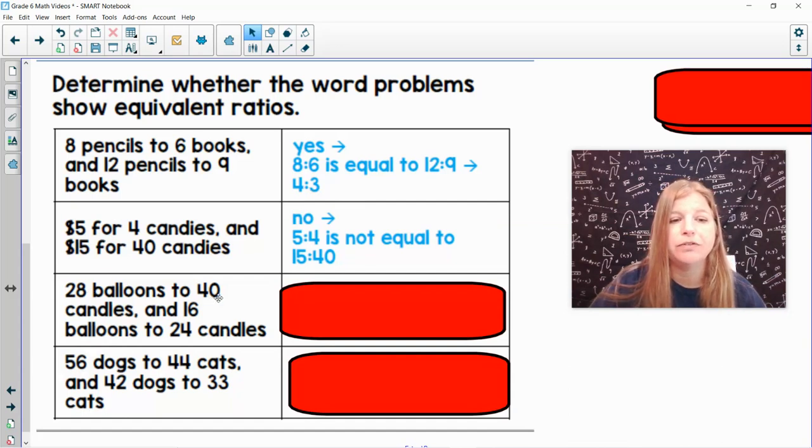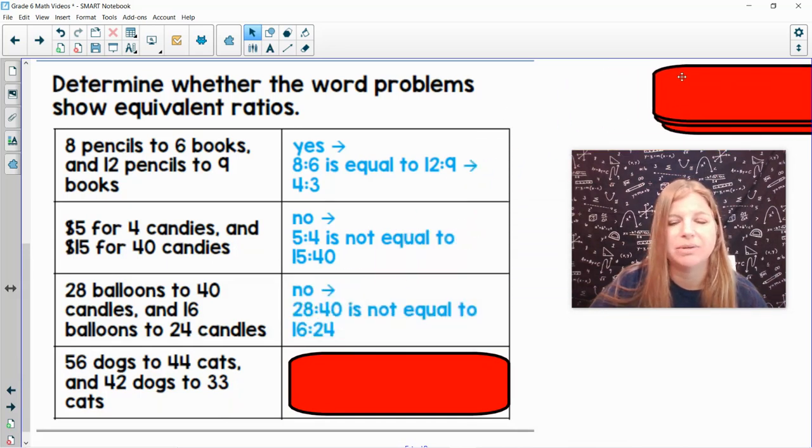28 balloons to 40 candles and 16 balloons to 24 candles. 28 to 40, if I divide those by 4, I would get 7 to 10. 16 to 24, I could divide those by 8 and I get 2 to 3. So no, not equal.